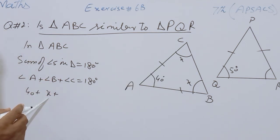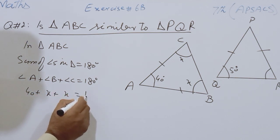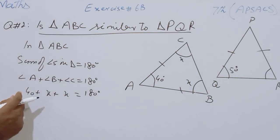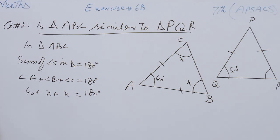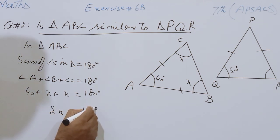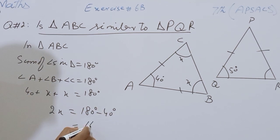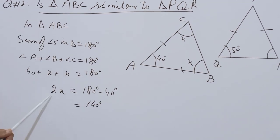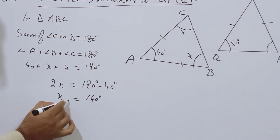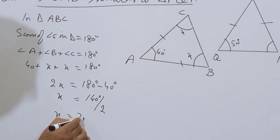In place of Angle B I will write X, and in place of Angle C I will also write X, equal to 180 degrees. This 40 is on the left side; when we transfer it to the other side it becomes minus. So X plus X equals 180 degrees minus 40 degrees. When we subtract 40 from 180 we get 140 degrees. 2 is multiplied with X; when we transfer it to the other side it will divide, and the value of X becomes 70 degrees.